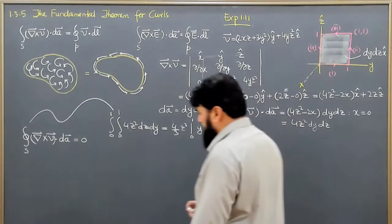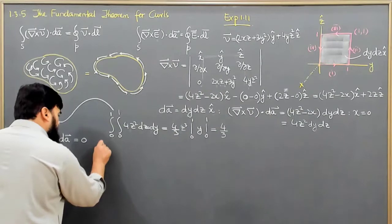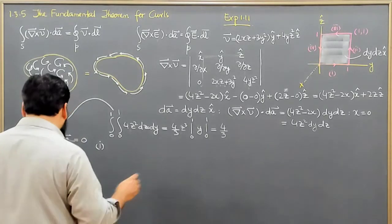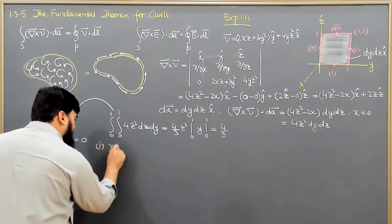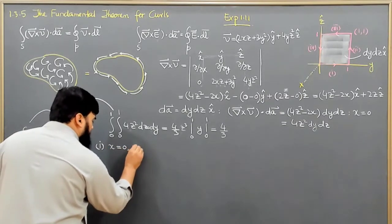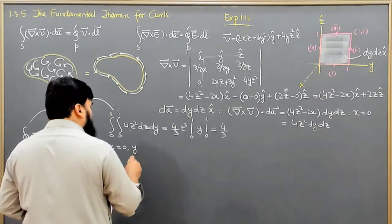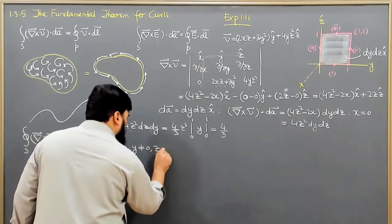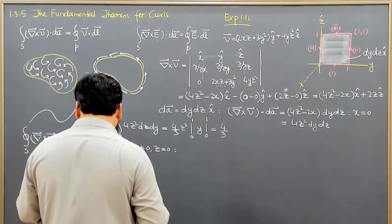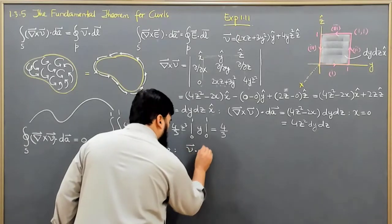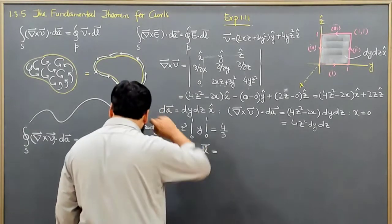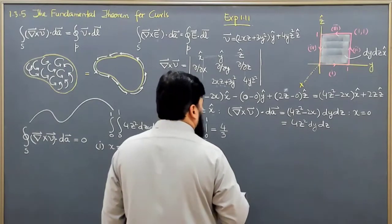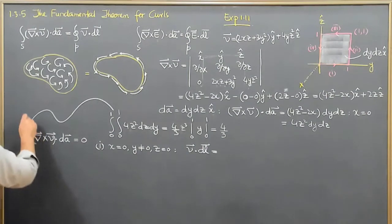Now I calculate the line integral along the faces. For the very first path, dy is changing, and along this axis we have x equal to 0, y is some non-zero value, and z is equal to 0. Writing v dot dl, since x and z are 0, dx and dz will be equal to 0.